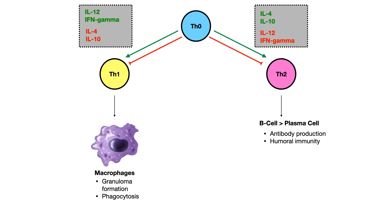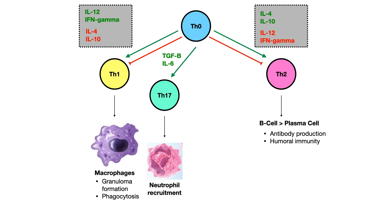In addition, you can also create TH17 cells. For exams, all you need to know is what promotes this pathway — don't worry about what inhibits it. TGF-beta and IL-6 promote the differentiation from TH0 into TH17 cells. Once you have TH17, it's very important to know that this recruits neutrophils. So when you think TH1, think macrophages; when you think TH17, think neutrophils; when you think TH2, think antibodies.